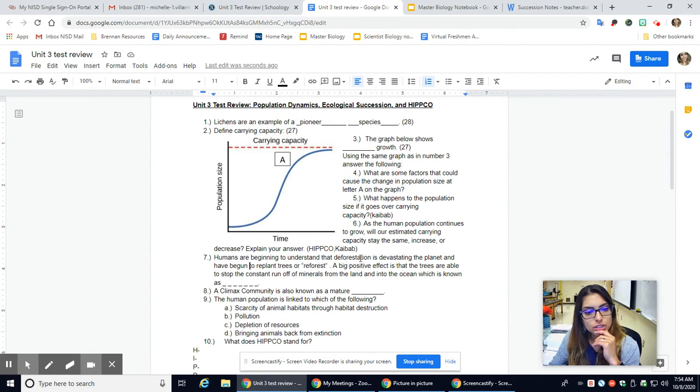Number seven, humans are beginning to understand that deforestation is devastating to the planet, right? Kind of what we just talked about. And have begun to replant trees. This is called reforesting or reforestation, this activity. A big positive effect is that the trees are able to stop the constant runoff of minerals from the land and into the ocean. This is called... let's see how many letters, one, two, three, four, five, six, seven.